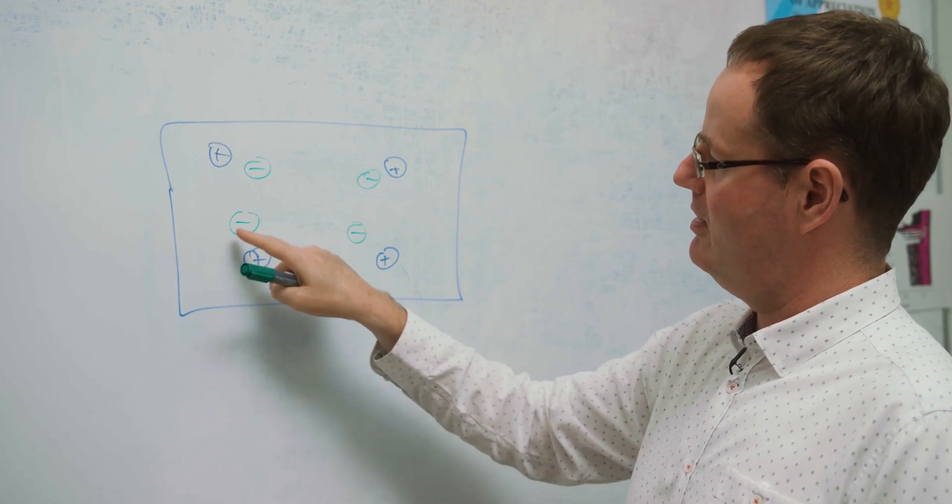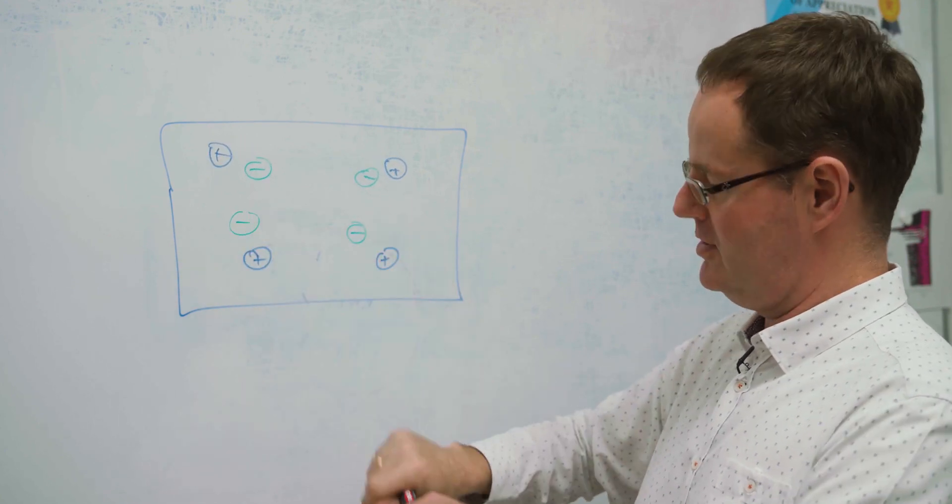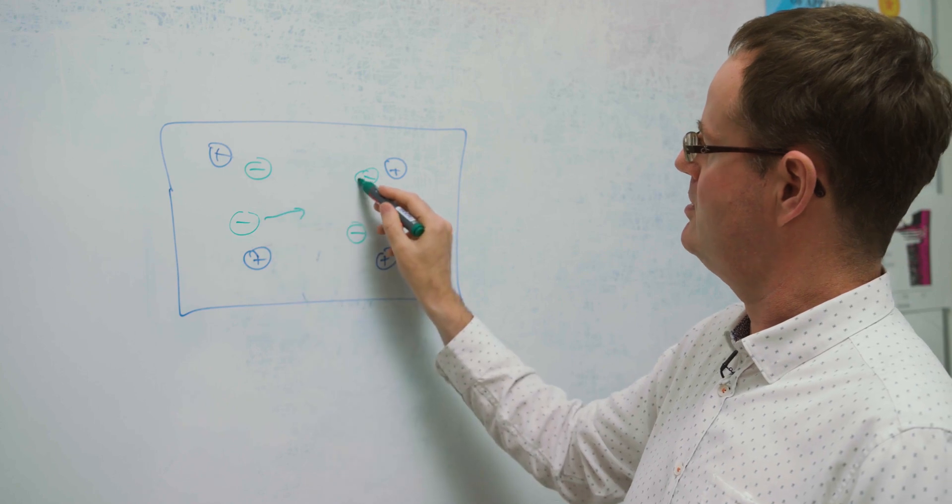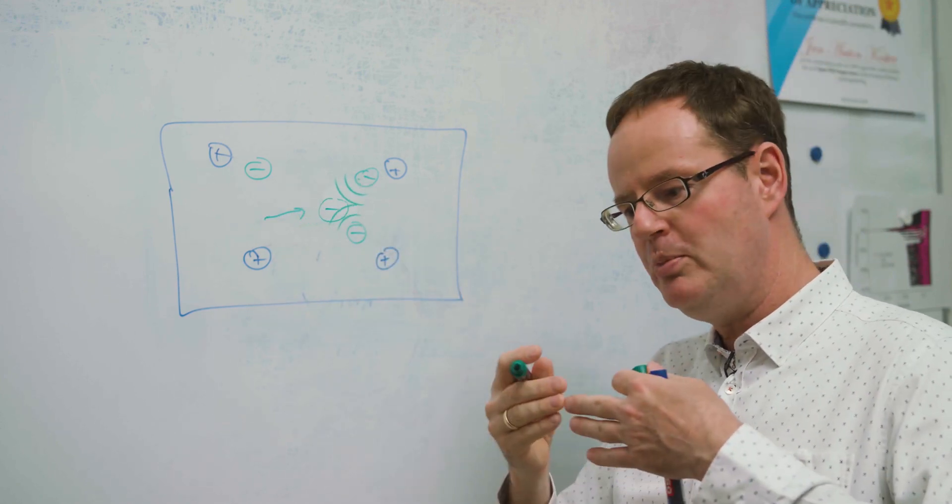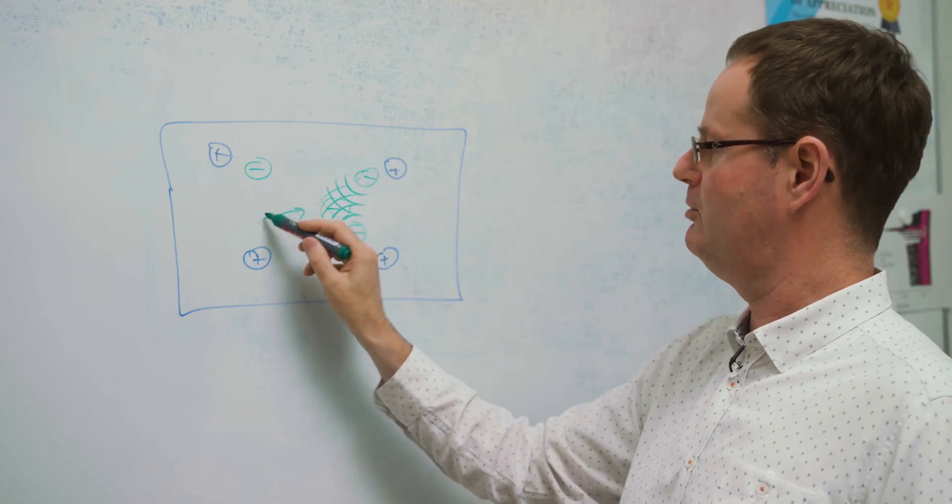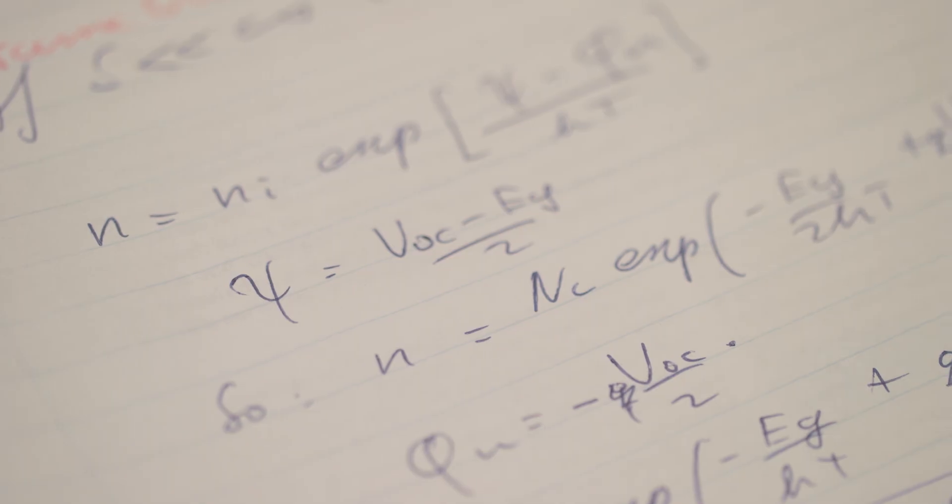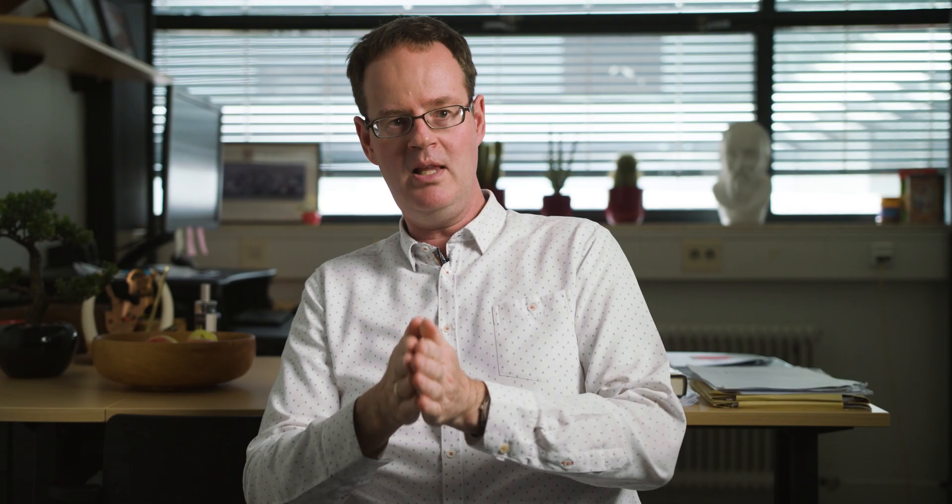The other problem is that if this electron wants to move to the right, for example, it will sense the presence of all the other electrons. And there's repulsion, so that makes it more difficult for this electron to move to the right. This is one of the things that limits the electrical conductivity of our thermoelectric materials. We don't want this.